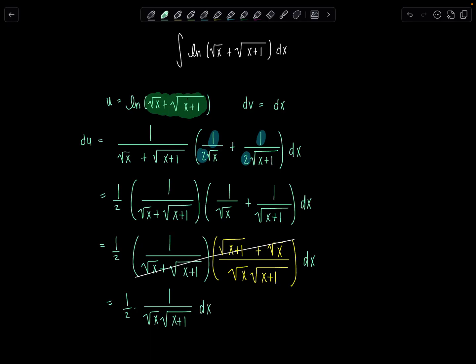Okay. And then v is x. That was relaxing. Now let's apply our bipartis formula and then rewrite what we have.